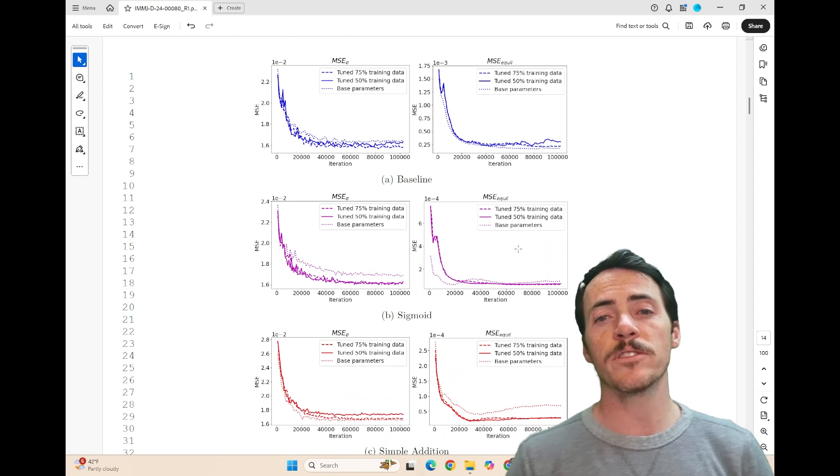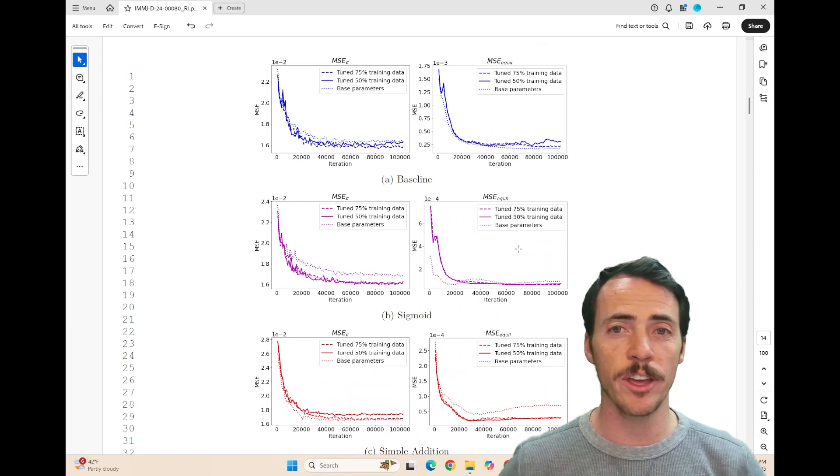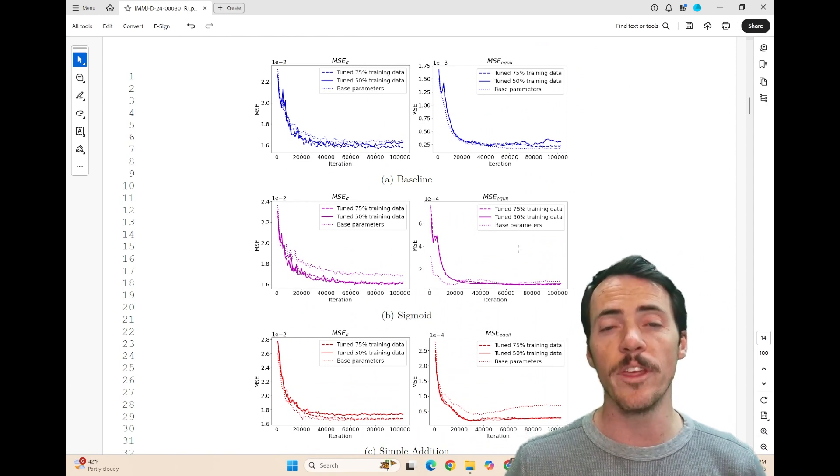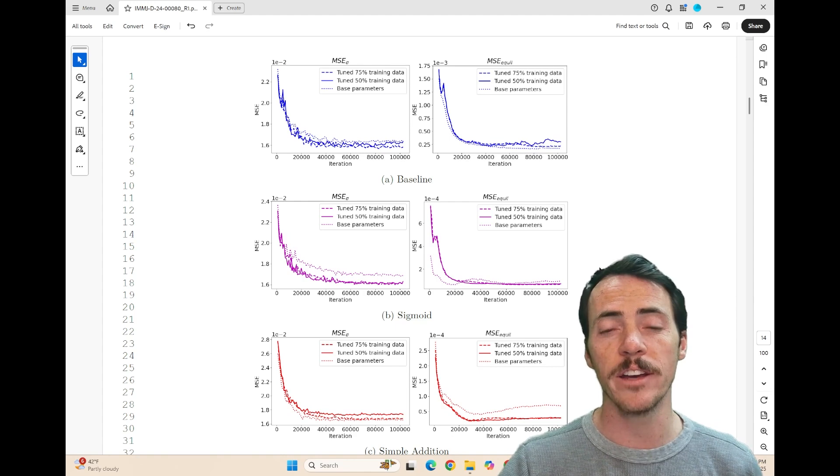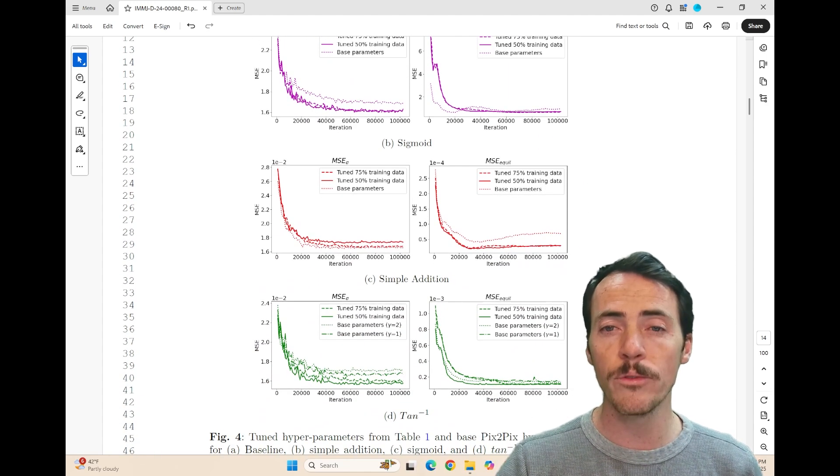So what do they find? Well, first off, do things converge faster? Do they converge to be more accurate? They do. They find that when compared to the baseline, these physics-based regularization terms do improve things.